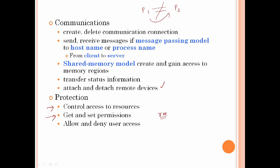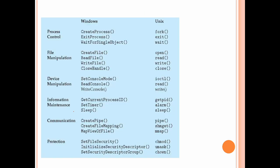If you need to read, you need read and write permissions. You need to delete all permissions. You need to allow and deny user access. For example, if you use Google Drive and upload a file, you can allow or deny access. So you need to protect OS resources. Protection covers both Windows and UNIX.